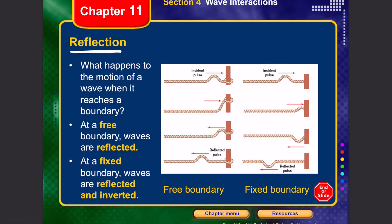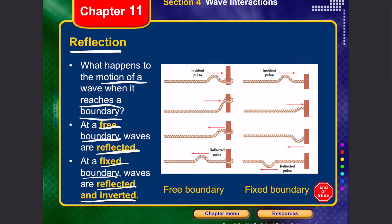Now let's talk about reflection. What happens to the motion of a wave when it reaches a boundary? Consider a rope tied to a fixed end and one tied to a moving end. With a free boundary, waves are reflected and come back in the same upward direction. With a fixed boundary, waves are reflected and inverted — the wave goes in the opposite direction. The wave motion is continuous, but because there is a fixed boundary it tends to go in the opposite direction, whereas with a free boundary it reflects back in the same direction.